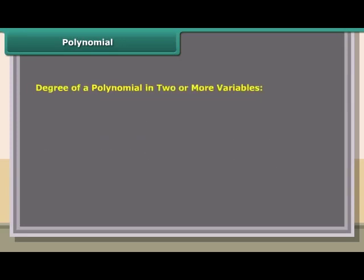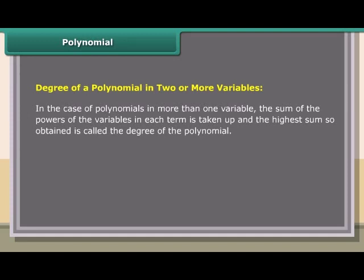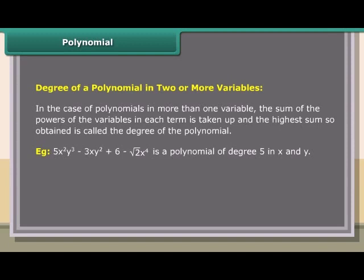Degree of a polynomial in two or more variables: In the case of polynomials in more than one variable, the sum of the powers of the variables in each term is taken, and the highest sum so obtained is called the degree of the polynomial. Example: 5x²y³ − 3xy² + 6 − √2·x⁴ is a polynomial of degree 5 in x and y.